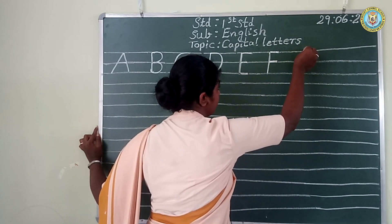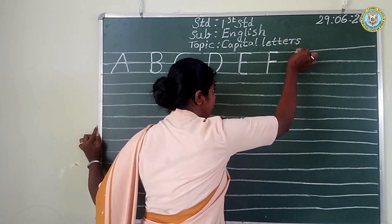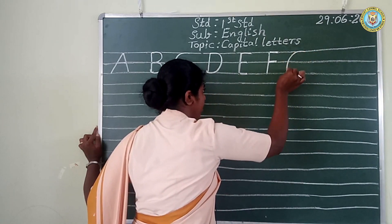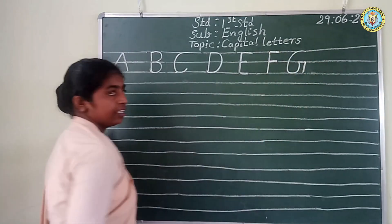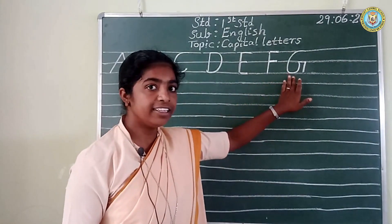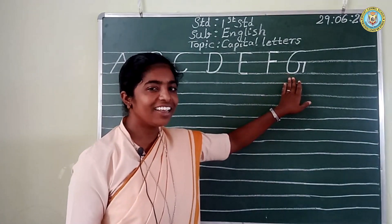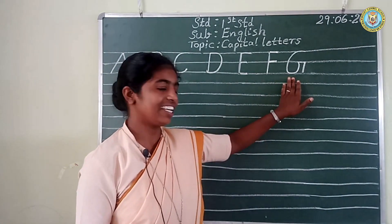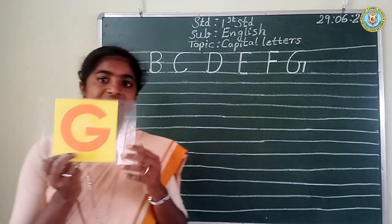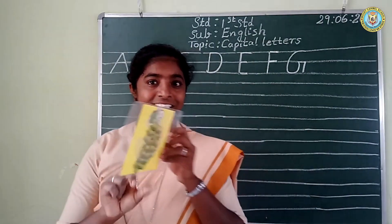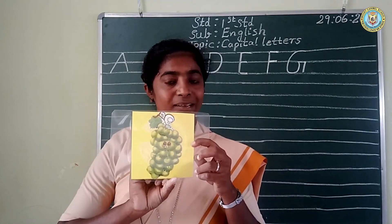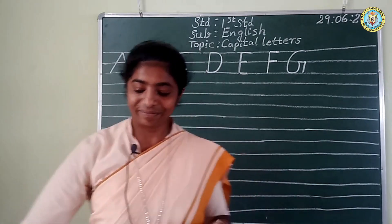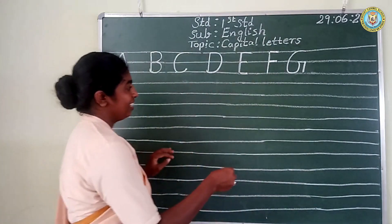G. Look at the board, children. G. Big curve and the small line. G. Look at the board — which letter is this? G. Yes, you all know it. G for grapes. G for grapes. Have you all eaten grapes, children? Yes, this is sweet.